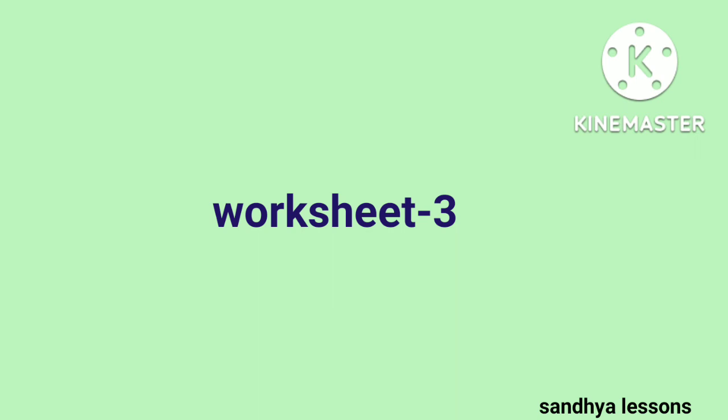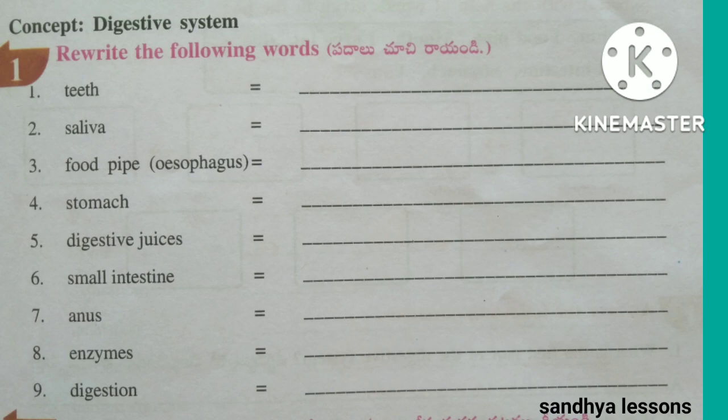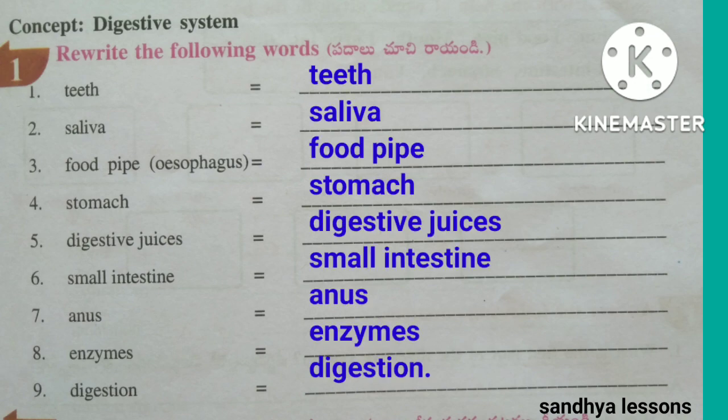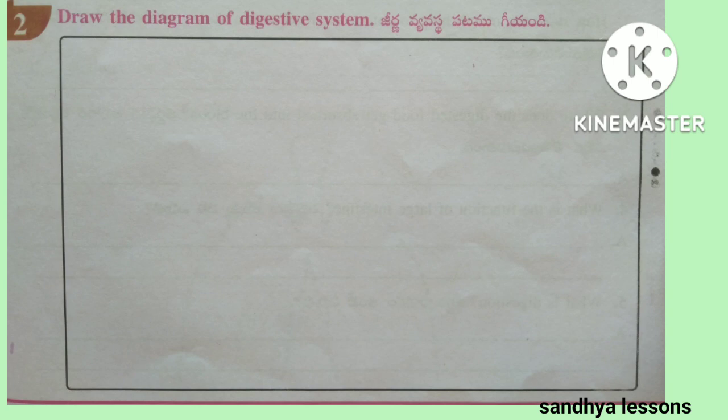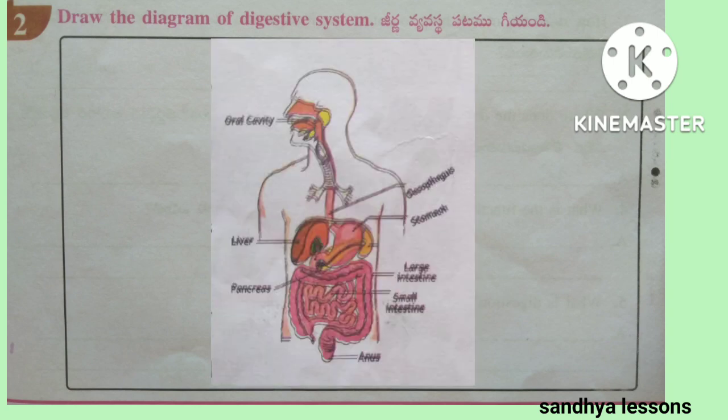Worksheet 3. First, rewrite the following words. Second, draw the diagram of the digestive system.